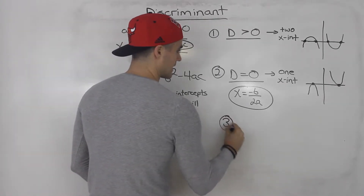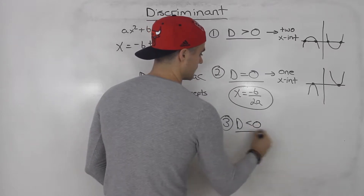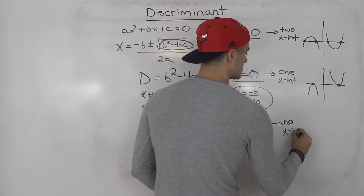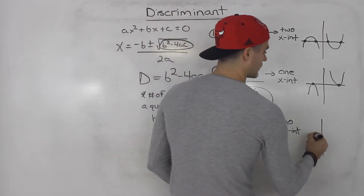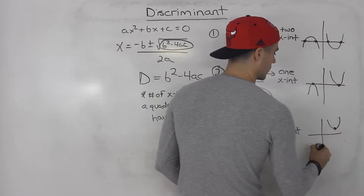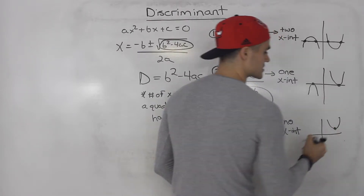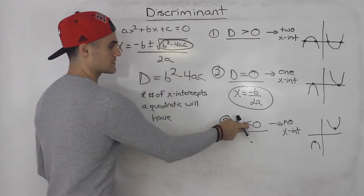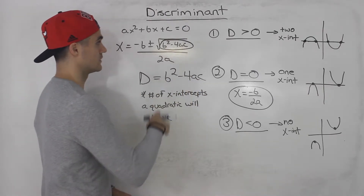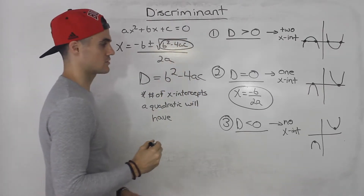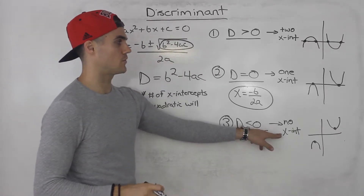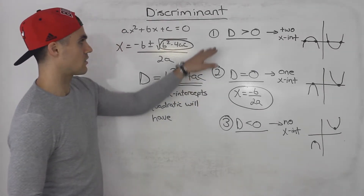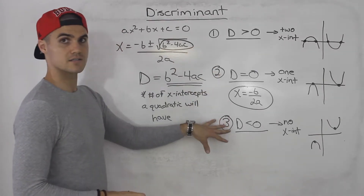The last case: if the discriminant is less than zero, there are going to be no x-intercepts. A quadratic in this case never crosses the x-axis. That makes sense because if b squared minus 4ac is negative, you can't square root a negative, so you get no solutions — meaning there are no x-intercepts.